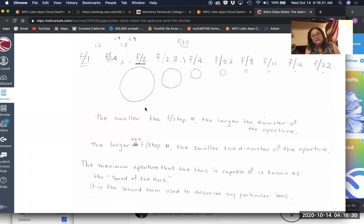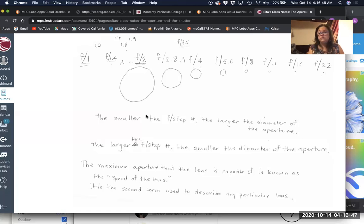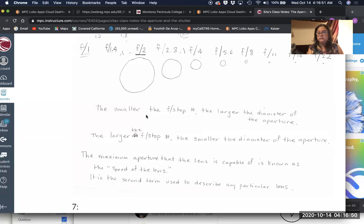And the larger the aperture, in general, the more desirable and expensive the lens is, unless it's a plastic lens that isn't very good. But in general, the larger the maximum aperture, the higher the quality and the more expensive the lenses.